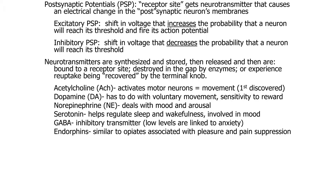The potential for them to fire or not fire is based on the threshold being reached or not reached. If the threshold is reached, an action potential is sent down the line, skipping over those nodes of Ranvier — you remember the myelin sheath — and causes some of those vesicles to fuse with the membrane in the terminal knob.